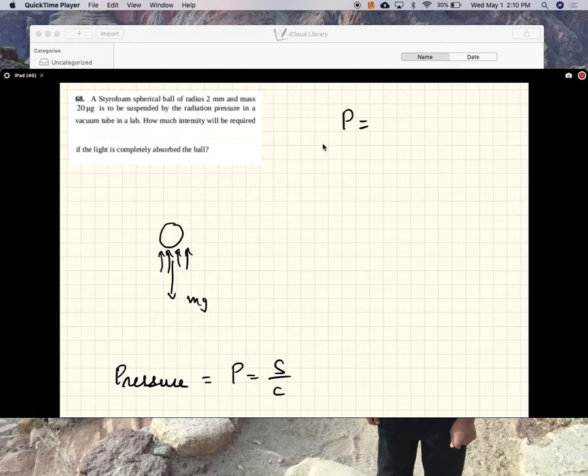And please check the expression. It's E max B max divided by 2 mu naught divided by C. How much intensity will be required? Okay, so yeah, and S is the intensity, so S average is the intensity.